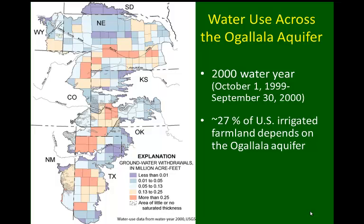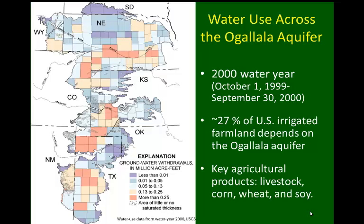Roughly 27% of the irrigated farmland in the United States depends on the Ogallala Aquifer, making it a critically important water resource for agriculture. The key agricultural products that water supports include livestock, corn, wheat, and soy crops.